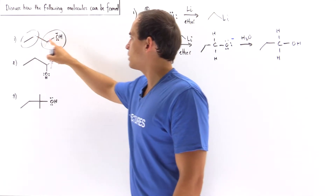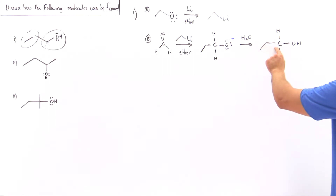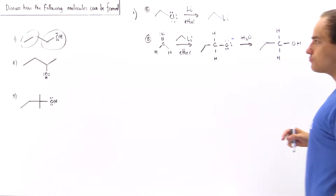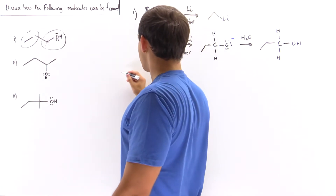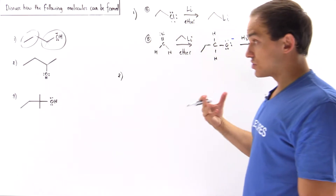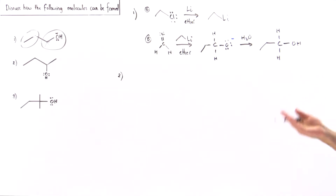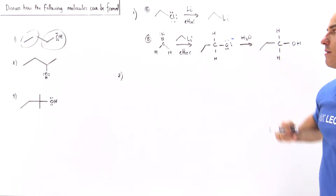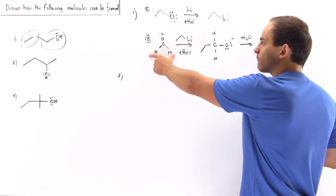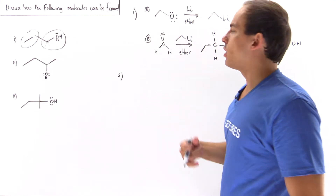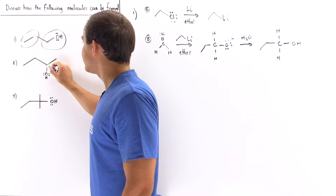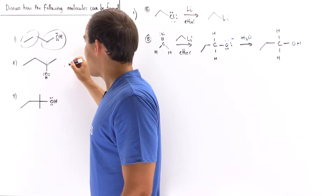This is our primary alcohol product — exactly what we wanted to form. It has three carbons with the OH attached to the terminal carbon. Moving on to product number two, the secondary alcohol, the steps are very similar except we don't use formaldehyde. We use an aldehyde, because that carbonyl carbon is attached to only one H atom.